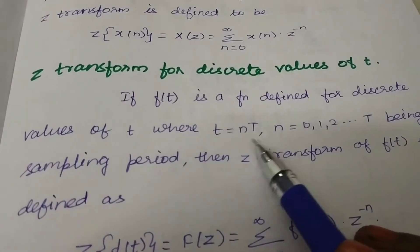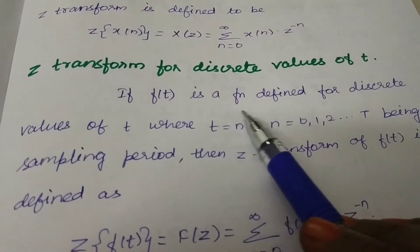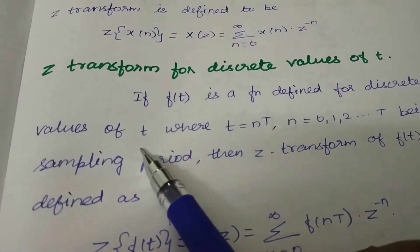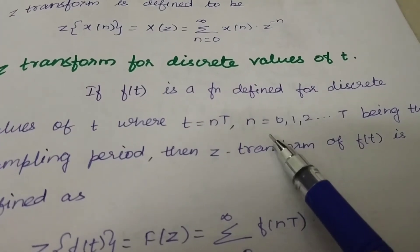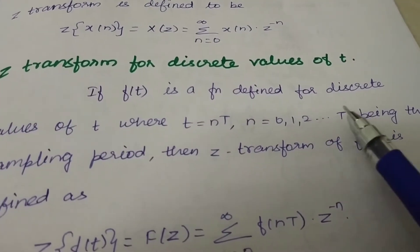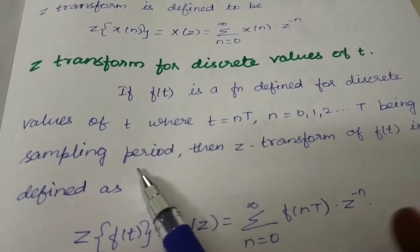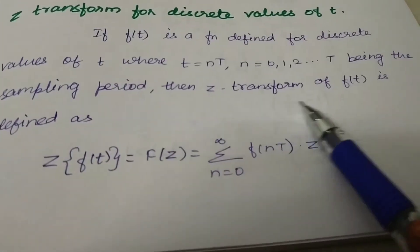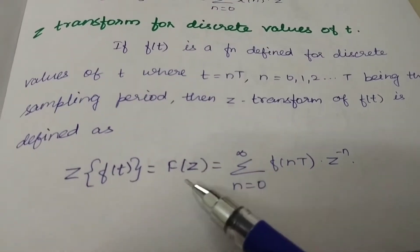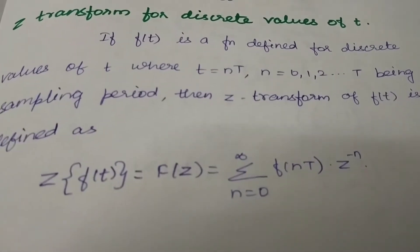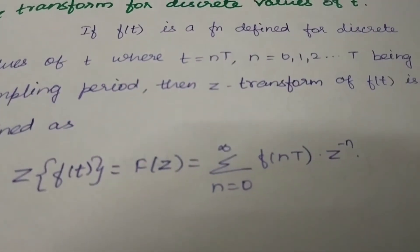Here t is replaced by n into capital T. If f(t) is a function defined for discrete values of small t, then t equal to n into capital T, where n equals 0, 1, 2, etc., and capital T is the sampling period. Then the Z-transform of f(t) is defined as: Z of f(t) equal to F(z) equal to summation over n equal to 0 to infinity of F(nT) into Z raised to the power minus n.